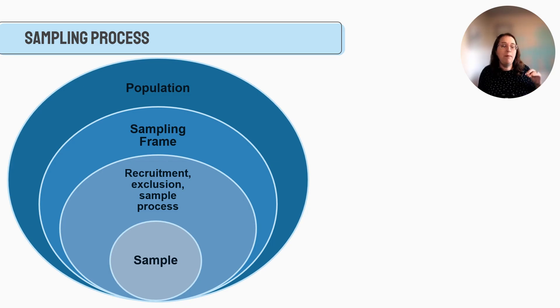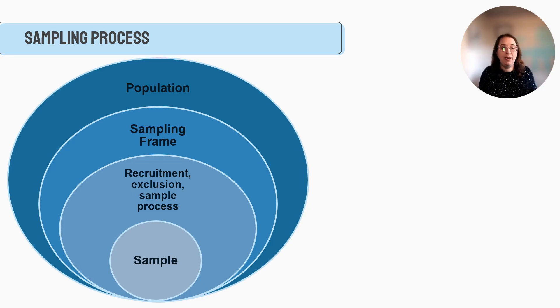So we really want to think about who is our population, is there a master list to get names from, what are the recruitment exclusion and inclusion criteria, and what is the final sample size.